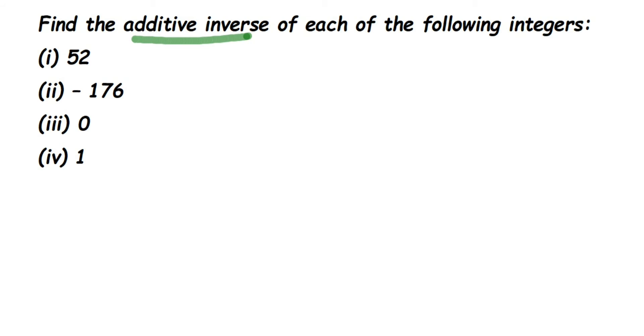Now additive inverse means suppose let us take a small number two. So to this two what we should add to get zero? So zero is the additive identity and additive inverse is this number, what you're going to add to this two.